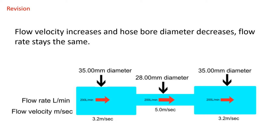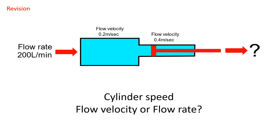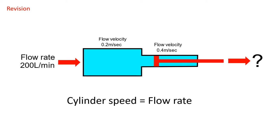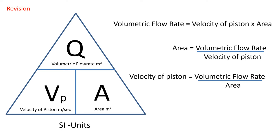Looking at the circuit on screen: what's responsible for the speed of that red push rod — is it flow velocity or flow rate? The speed of the push rod is determined by the flow rate. Remember, flow rate is movement and speed; pressure is force. As we can see from our flow rate formula triangle, pressure is nowhere to be seen.